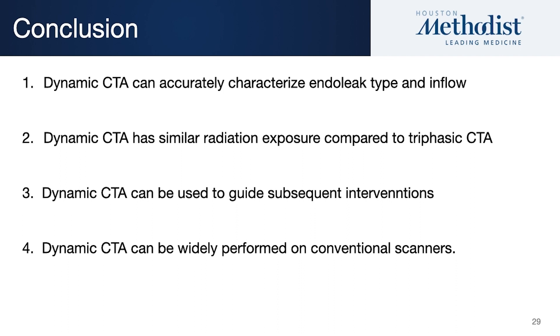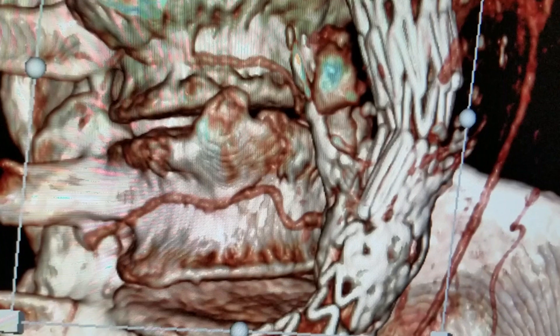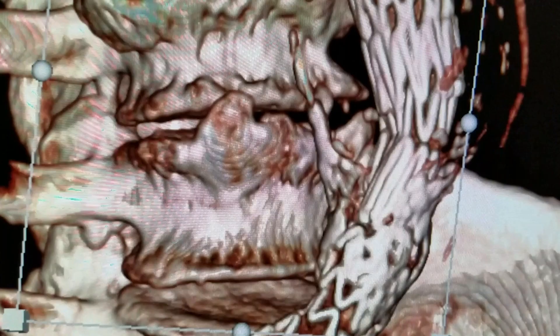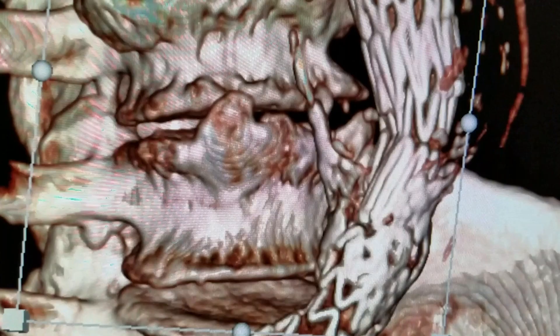In conclusion, dynamic CTA can accurately characterize endoleak type and inflow. It has similar radiation exposure to standard triphasic CTA. It can be used to guide subsequent interventions. Dynamic CTA can be widely performed in conventional scanners. When you put it together with multi-planar reconstruction and surface-rendered images, you can actually see dye arriving through the lower lumbar arteries, blooming up through the aneurysm sac and going out — in this case through an L3 — allowing us to very specifically understand these flow patterns.